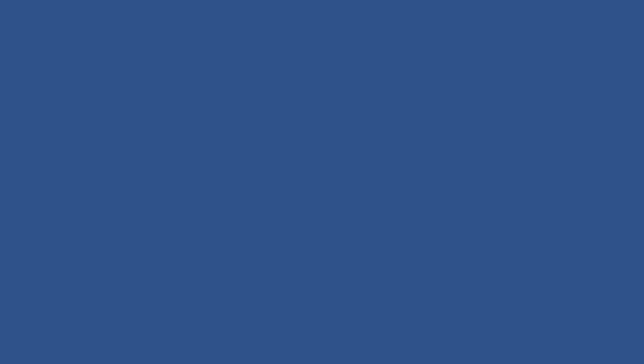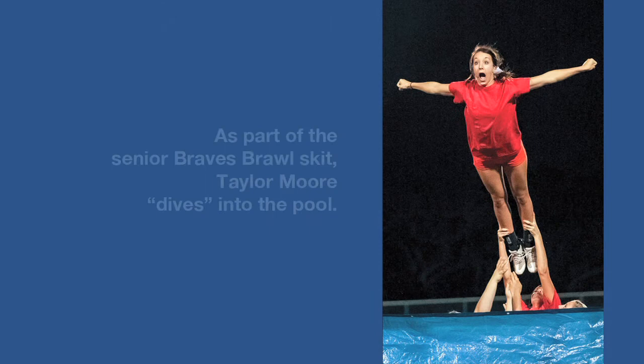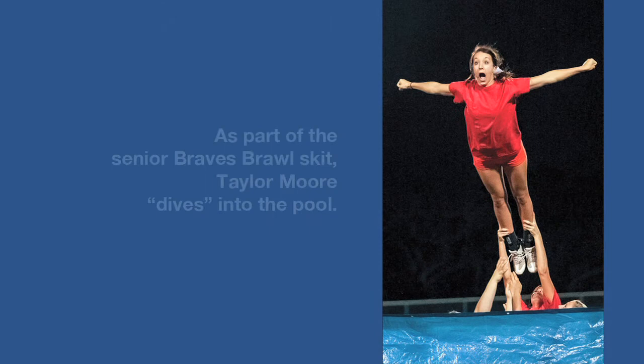Now that you've learned the ABCDs of caption writing, let's discuss a few tips. Tip one: don't interpret. Keep your captions factual to what is actually happening. Avoid interpretation — what you think is happening. In this caption, 'Fighting for first place at Braves Brawl, senior Taylor Moore shows her enthusiasm' — really? How do you know? Stick to writing about what you know is happening. Instead, maybe write this: 'As part of the senior Braves Brawl skit, Taylor Moore dives into the pool.' Stick to the facts and let the quote add flavor to the caption.